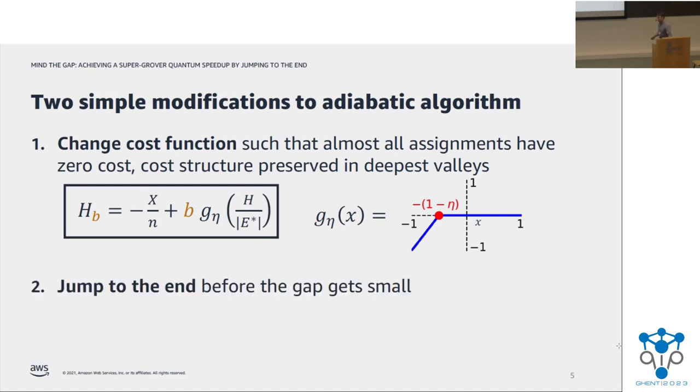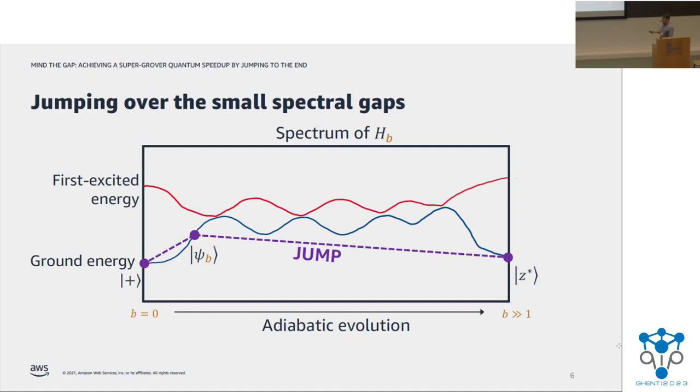And then the second idea is what inspires the title of the talk, which is that rather than evolve slowly through these regions where the spectral gap is small and hard to analyze, we're just going to go as close as we can to that region and then jump all the way to the end of the algorithm. So what do I mean by that? We can go back to this cartoon where you can see that the algorithm is going to have two steps. A first step where it goes from the plus state to this intermediate state, psi b, which is the ground state at an intermediate point along the interpolation, but close enough to the beginning that the gap is still guaranteed to be large here. But then when we get there, we just jump straight from there all the way to the end, and we try to find the optimal state z star.